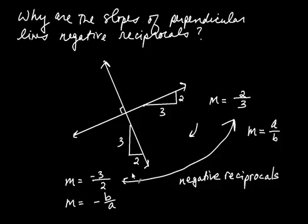And that's always going to be true for any two lines that are perpendicular. That's why the slopes of perpendicular lines are negative reciprocals.